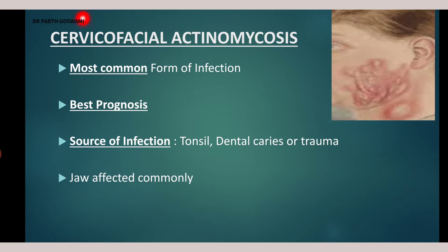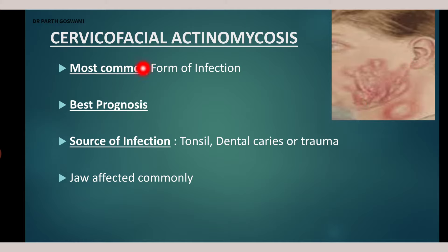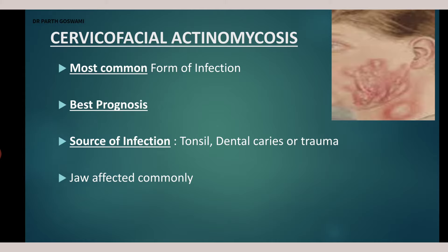The first type is cervicofacial actinomycosis, where the face and cervical area are involved. The common site of affection is the jaw area. This is the most common form of the infection. The source of infection is the normal commensal of the oral cavity — it could be due to tonsil infection, dental caries, or trauma. The prognosis is very good in this variety; cervicofacial actinomycosis has the best prognosis.